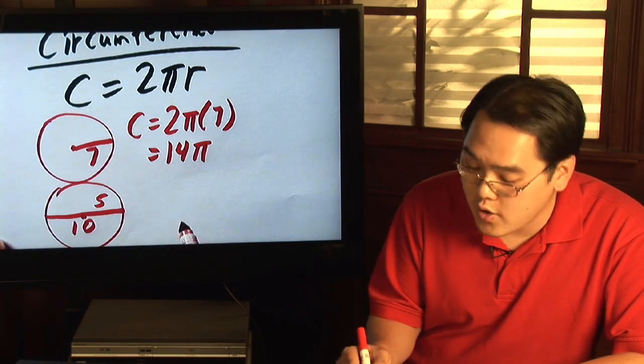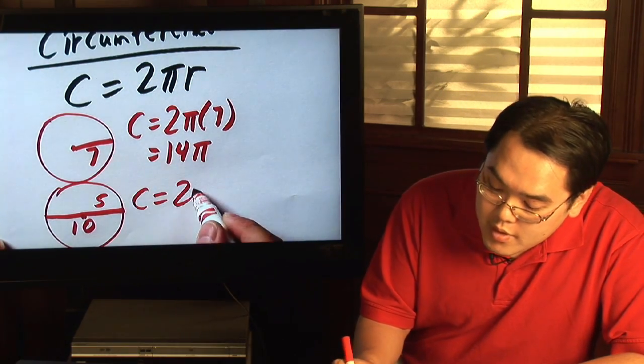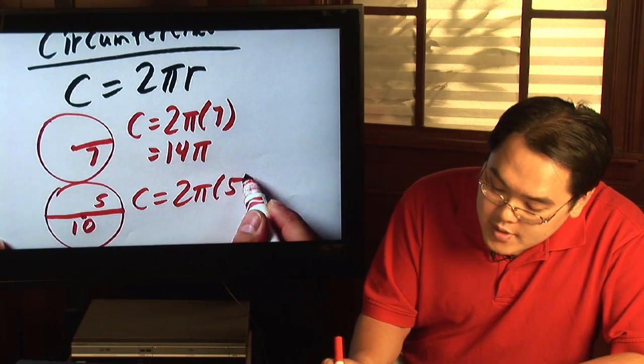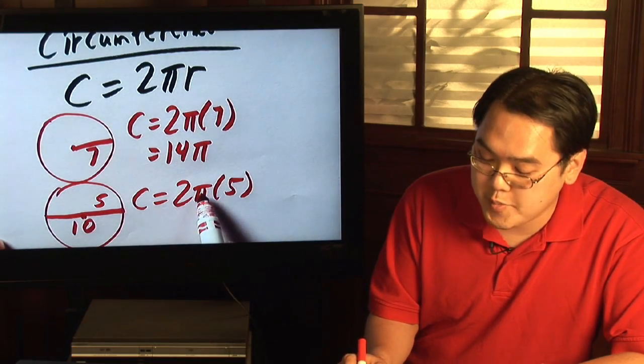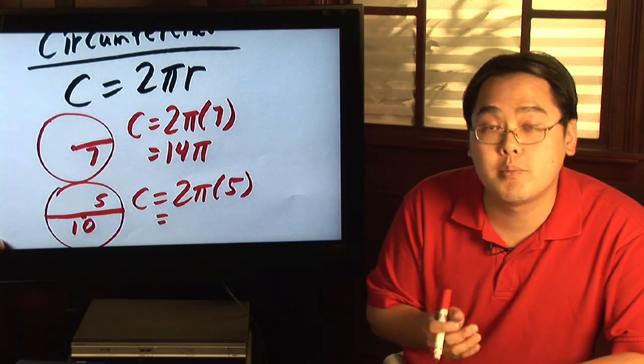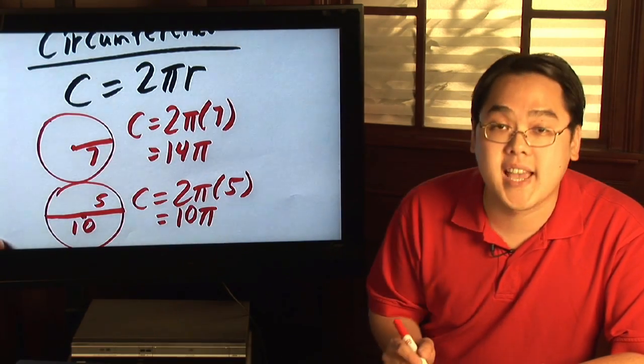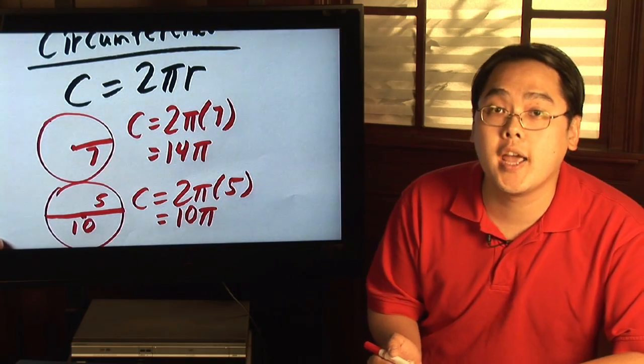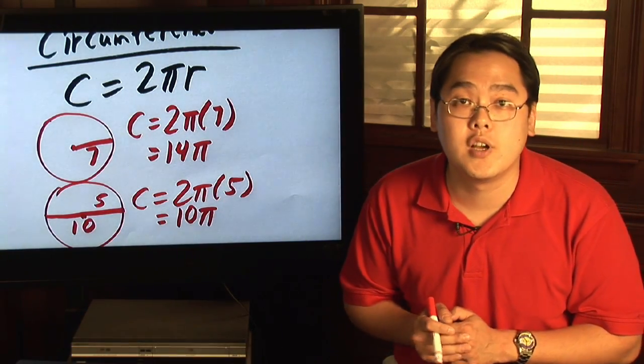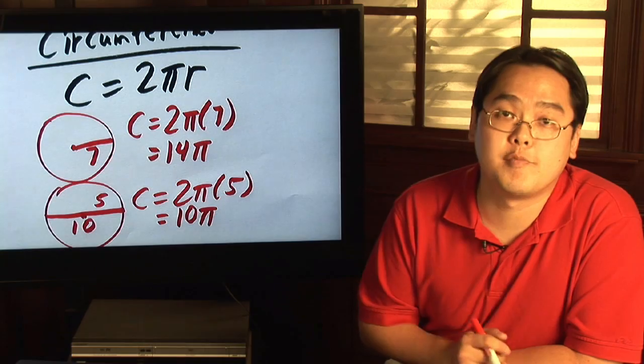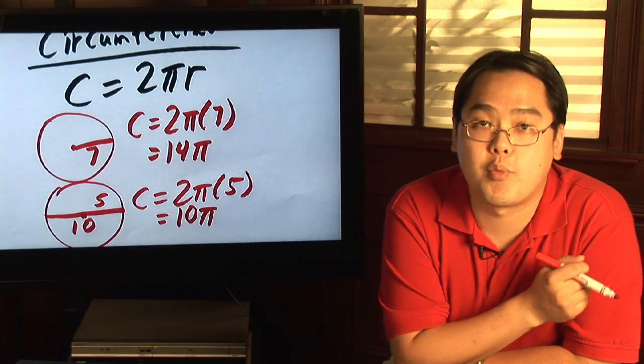And to find the circumference there, you just plug in the 5 where the r is and you have 2 times pi times 5. Again, multiply the whole numbers together. 2 times 5 is 10 and you have the exact value of the circumference being 10 pi. Or if you want to find the decimal answer, just put 3.14 in place of pi to get an idea as to what the approximation is.